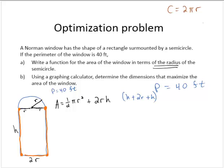Since we have a semicircle, we would want half the circumference, which would be π times the radius. So plus π times the radius is equal to 40 feet. We have 2r plus 2h plus πr equals 40.